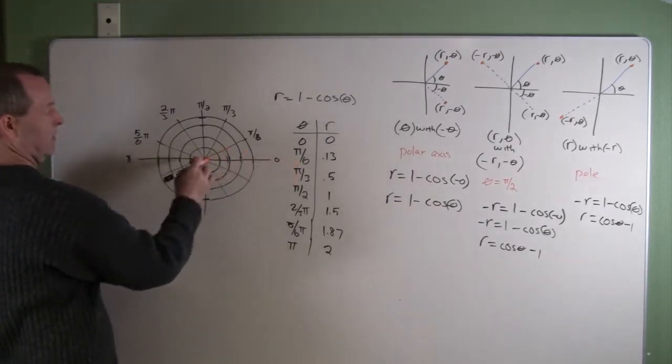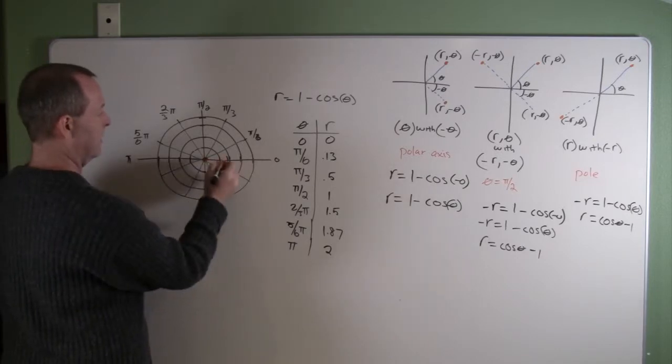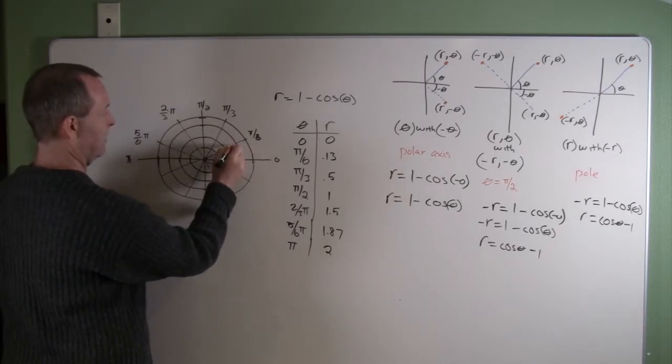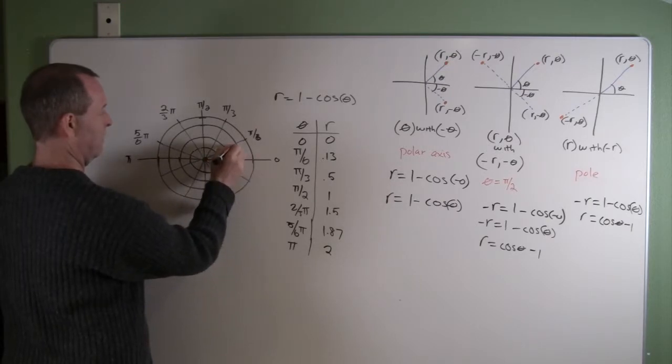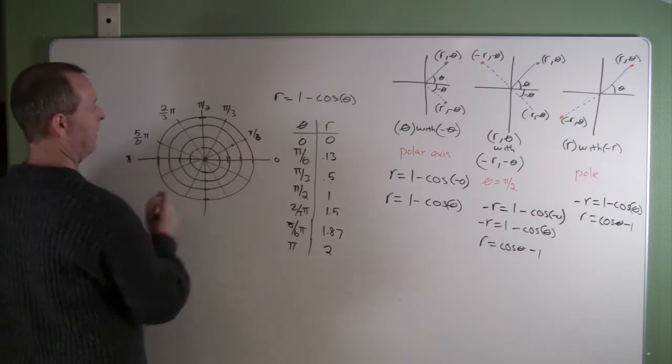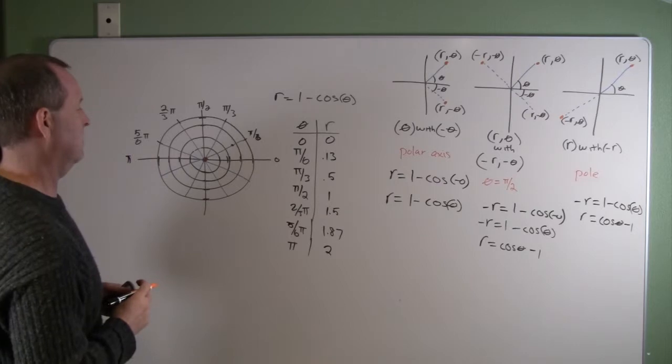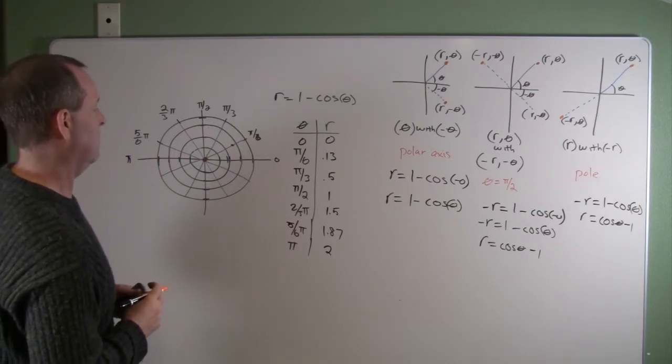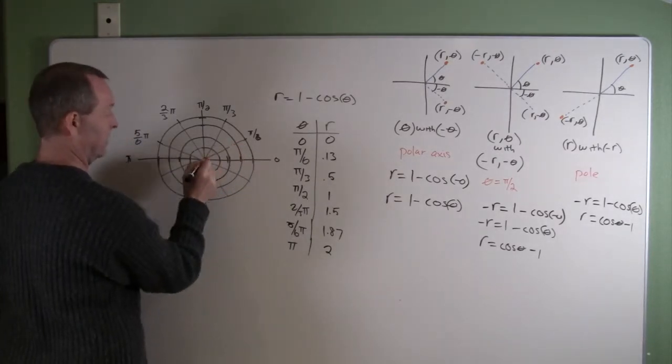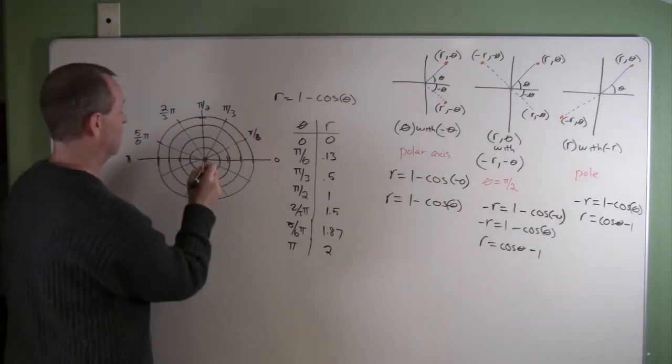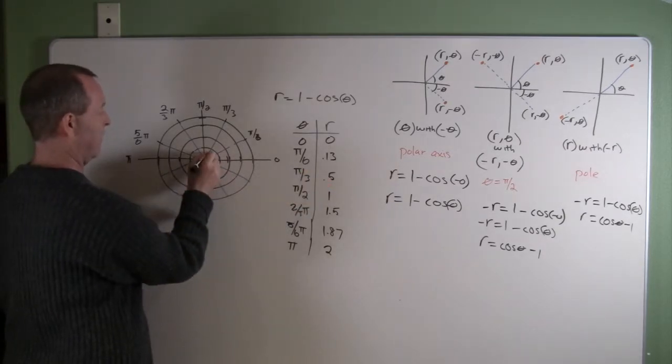On the pi over 6 terminal side, I can go out 0.13. So somewhere around there. Pi thirds, I can go out - sorry, that's just 0.5, which is halfway right about there.